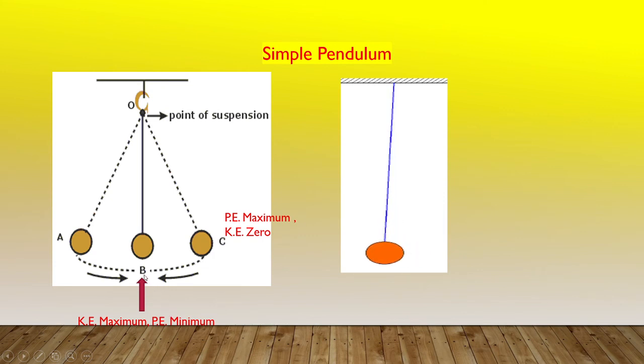Further, due to having gained kinetic energy, the bob does not stop at the mean position. It overshoots the mean position and reaches the extreme C.